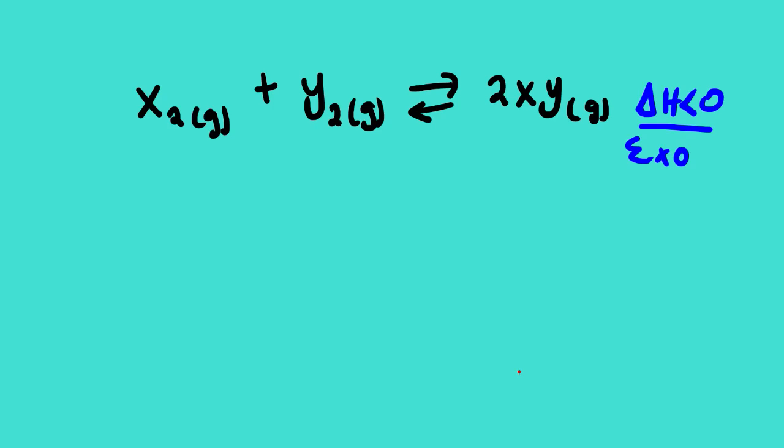In simple terms, according to Le Chatelier's principle, if this is our chemical equilibrium reaction and somehow we disturb it by tampering with the pressure, concentration, or temperature, this chemical reaction will try to reinstate — it will try to fix the disturbance so that it reaches a new equilibrium. Le Chatelier's principle explains how the reaction will adjust so that it goes back to chemical equilibrium.